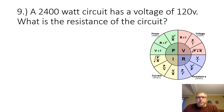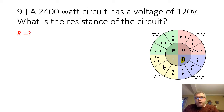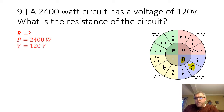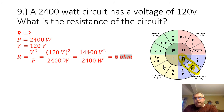Number nine: a 2,400-watt circuit has a voltage of 120 volts. What is the resistance of the circuit? We are looking for resistance, and we are given the power and the voltage. Our equation is R equals V squared over P. 120 volts squared divided by 2,400 watts gives us 6 ohms.